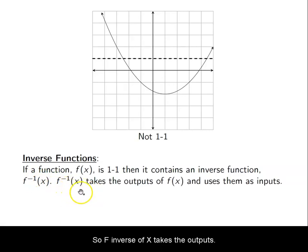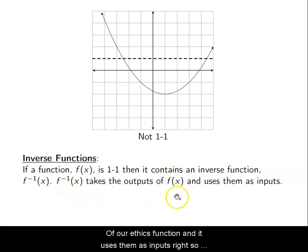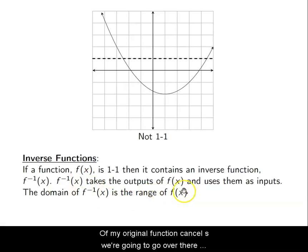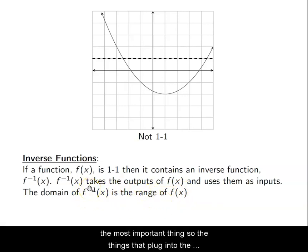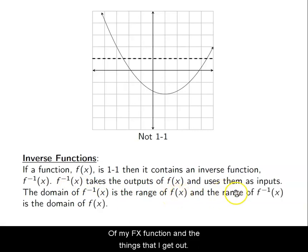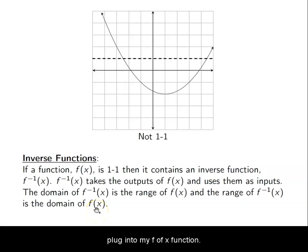f⁻¹(x) takes the outputs of our f(x) function and uses them as inputs. The things that I plug into the inverse function are the things that I get out of my original function. And the things I get out of the inverse function are the things I was plugging into f(x).